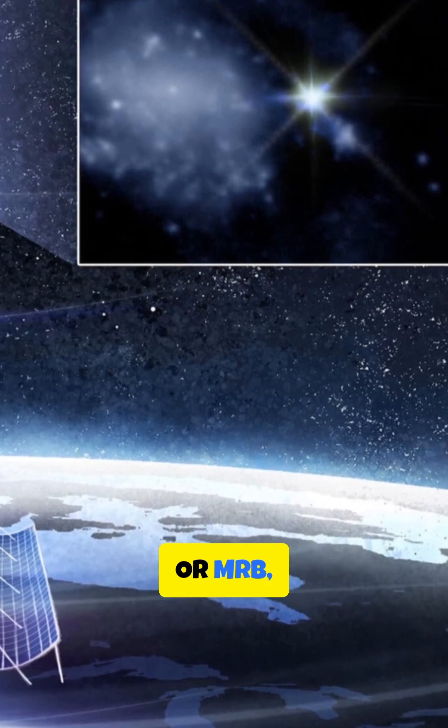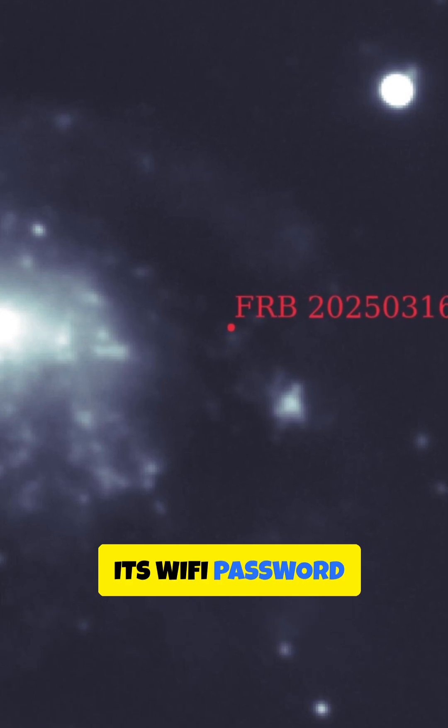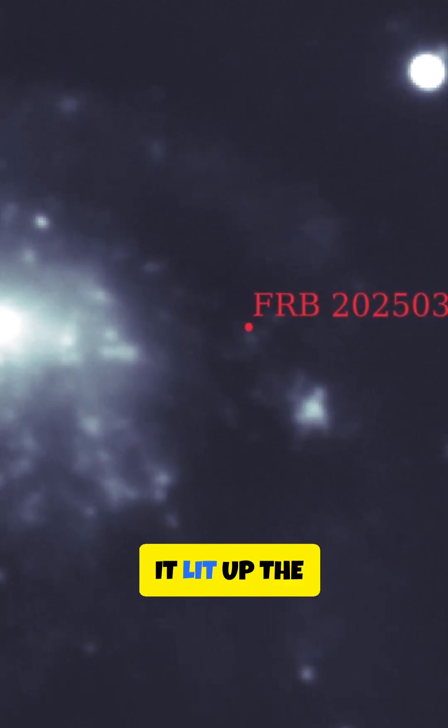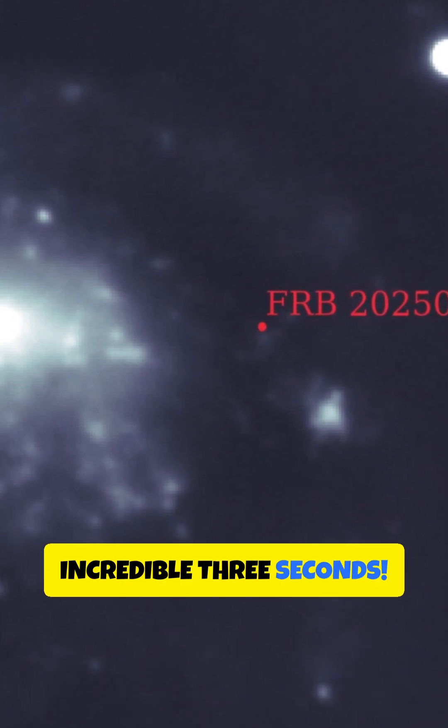This mega radio burst, or MRB, named FRB20191221A—sounds like the Wi-Fi password of the NSA, right? It lit up the radio skies with pulses lasting an incredible three seconds.